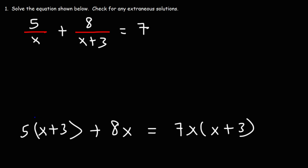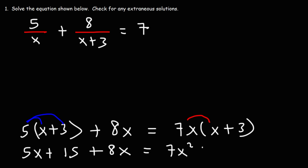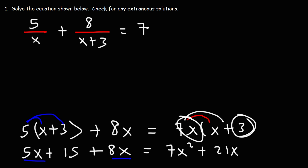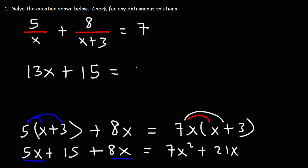Now let's distribute. Distributing the 5 to (x plus 3): 5 times x and 5 times 3 gives us 5x plus 15. Now distributing 7x to (x plus 3): 7x times x is 7x squared, and 7x times 3 is 21x. Combining the like terms on the left, 5x plus 8x is 13x, so we have 13x plus 15 equals 7x squared plus 21x.